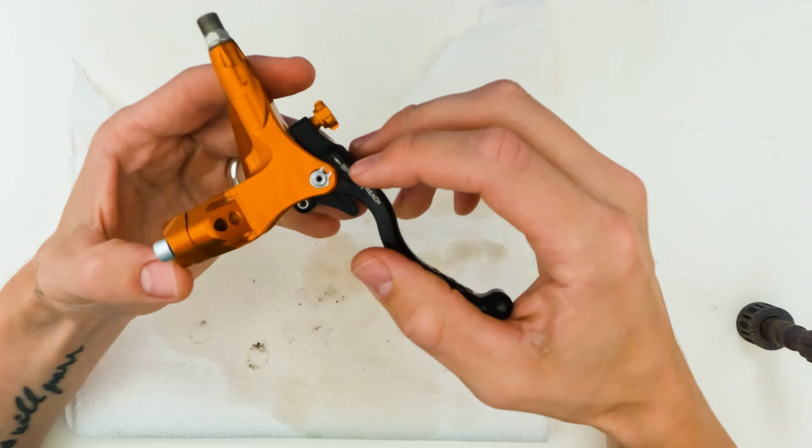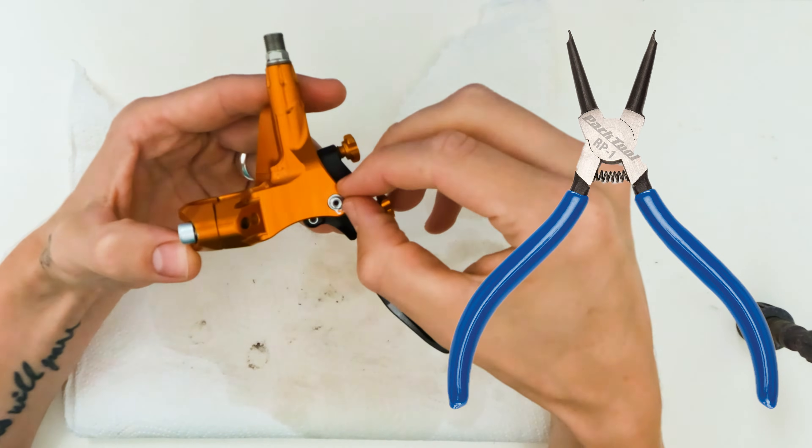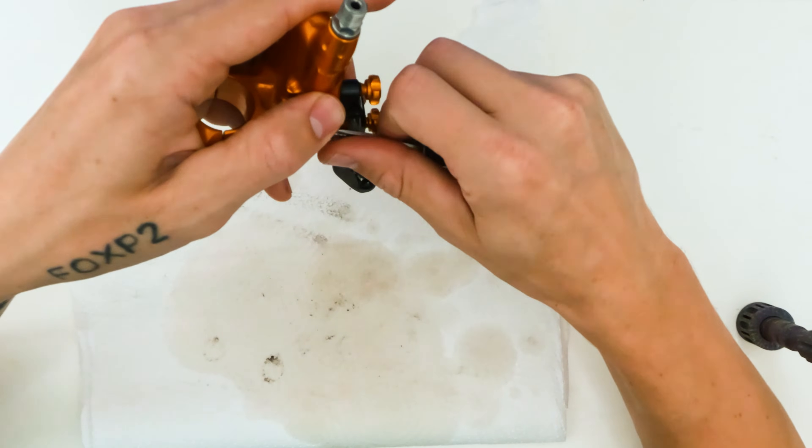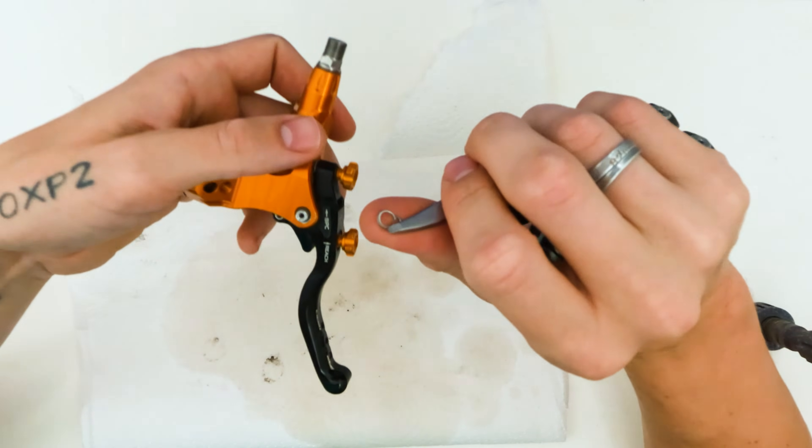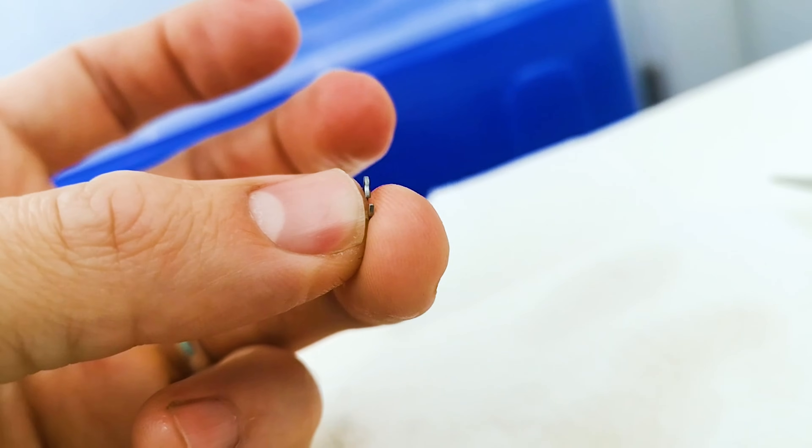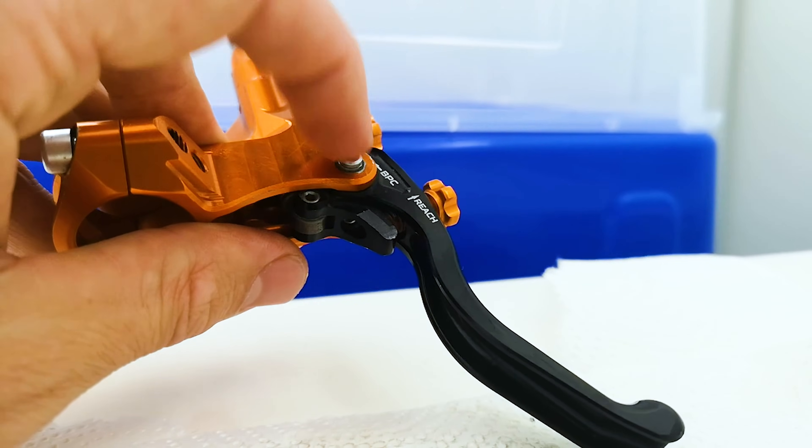You're removing this clip. So you need one of those weird plier things. I don't have that, so I'm just going to... There we go, I got it. I did bend it a little bit, but I'm just going to bend that back. So now we're going to remove the entire lever. It removes from the bottom to the top towards the reservoir.